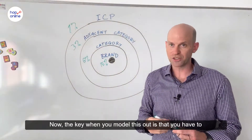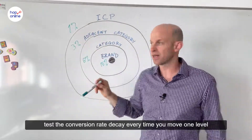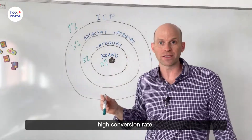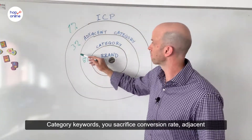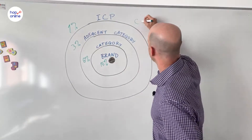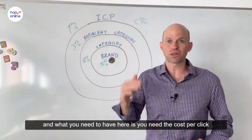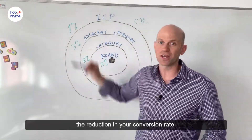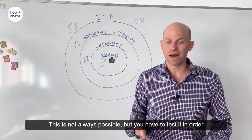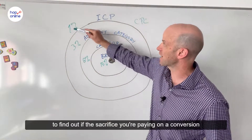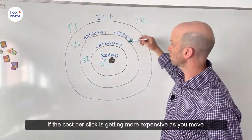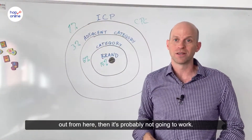Now the key when you model this out is that you have to test the conversion rate decay every time you move one level out to a different ring on this dartboard. Brand keywords: high conversion rate, they'll get saturated quickly. Category keywords: you sacrifice conversion rate. Adjacent keywords and ICP keywords keep moving out. But what you can do is measure the cost per click. You need the cost per click to be reducing on average to the same degree as your conversion rate reduction, because then you could expect to see roughly the same ROI. This is not always possible, but you have to test it to find out if the sacrifice you're paying on conversion rate can still be profitable given hopefully a lower cost per click. If the cost per click is getting more expensive as you move out, then it's probably not going to work.